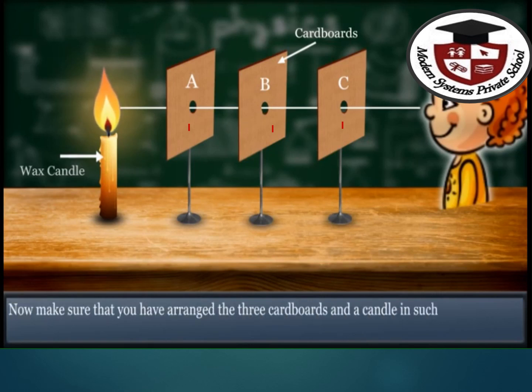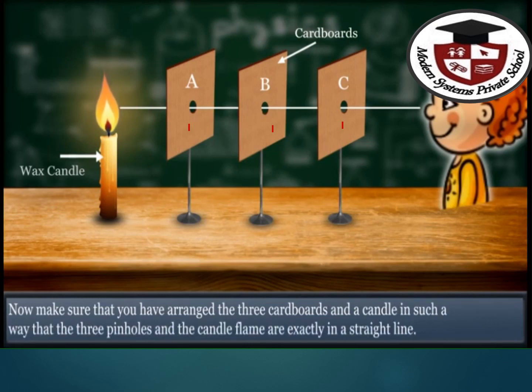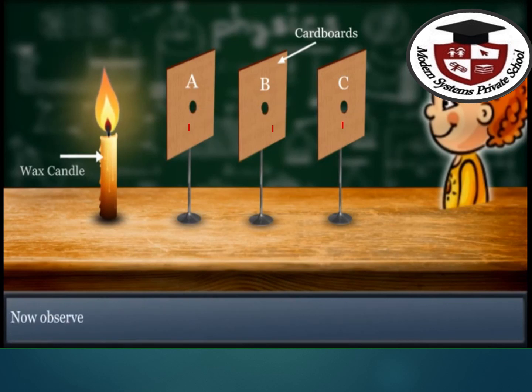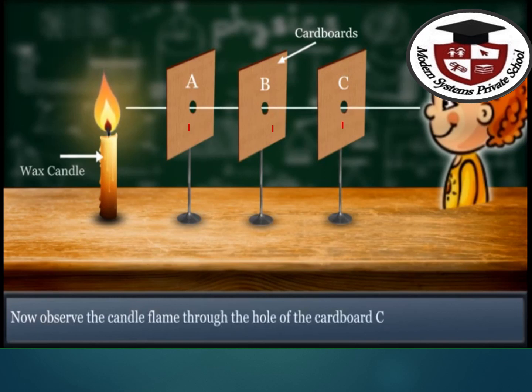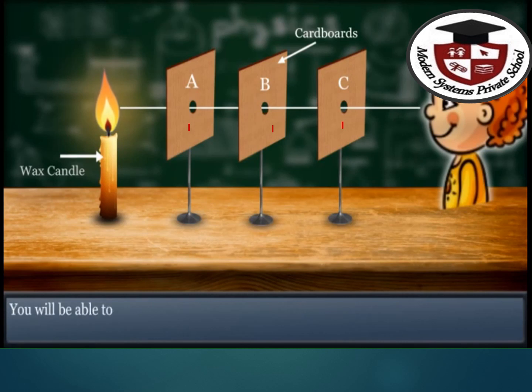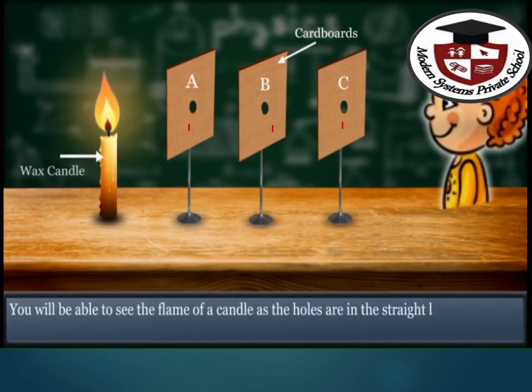Now make sure that you have arranged the three cardboards and the candle in such a way that the three holes and the candle flame are exactly in a straight line. Observe the candle flame through the holes of the cardboard. You will observe the light by looking from this hole. You can see the light. That means that light travels in a straight line.